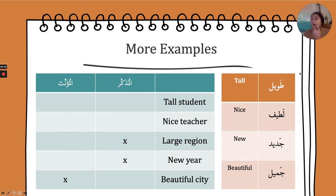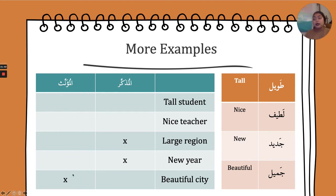Let's look at some examples. I have written out: tall student, nice teacher, large region, new year, and beautiful city. You're going to write these in Arabic. Notice I've X'd out certain ones because non-human things can't take both genders — they're either masculine or feminine. Region and year were on your vocab list from درس الأول, so look those up if you need to. Go ahead and pause, then unpause when you're done.